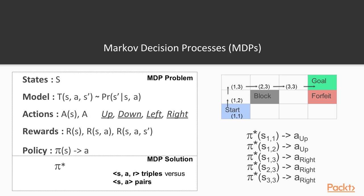What this policy does — it's a function pi that, given any particular state, returns an action. It tells you what action to take if you're in any particular state. And there is a special policy, pi star, that's called the optimal policy. The optimal policy maximizes your long-term expected rewards. Recall that we noted some differences between supervised learning and reinforcement learning: reinforcement learning is more dependent on state action reward triples, whereas supervised learning is dependent on the relationship between state action pairs.